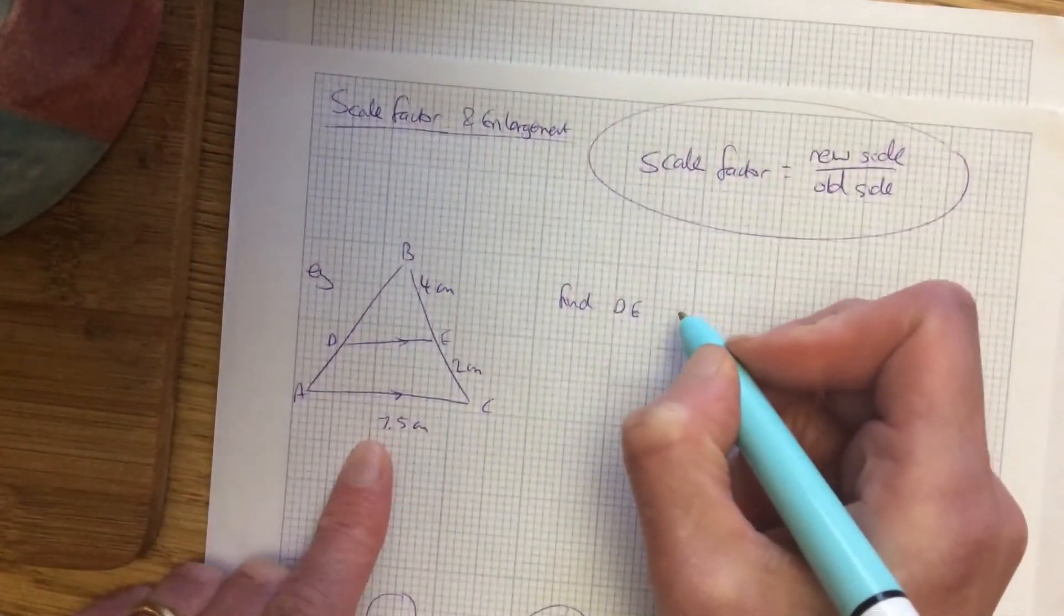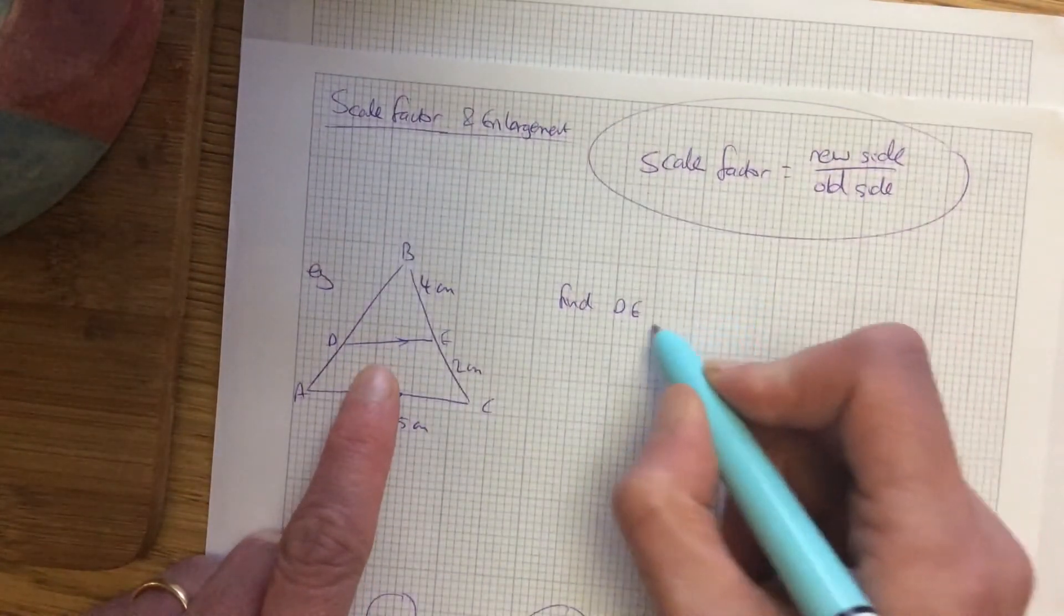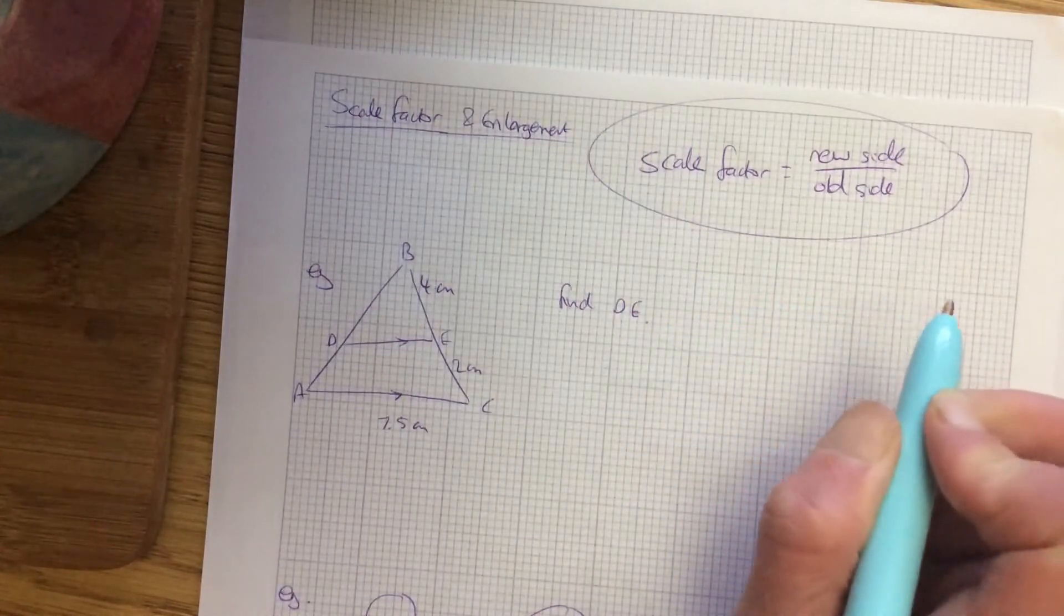So this is the first wee example I want you to copy down and then I'll answer it in a different colour so you can see.